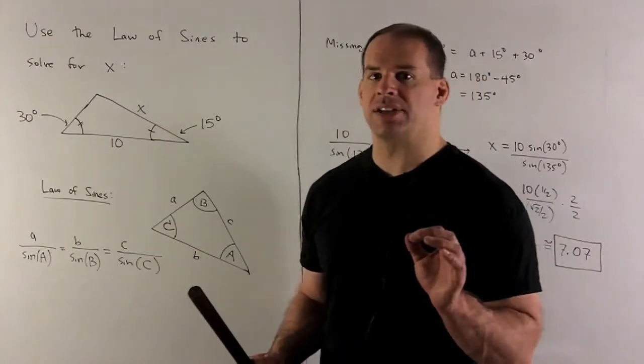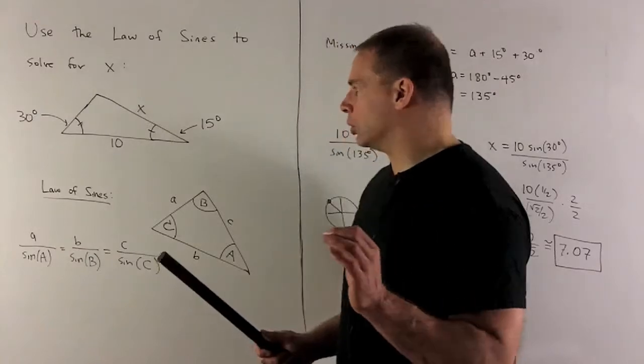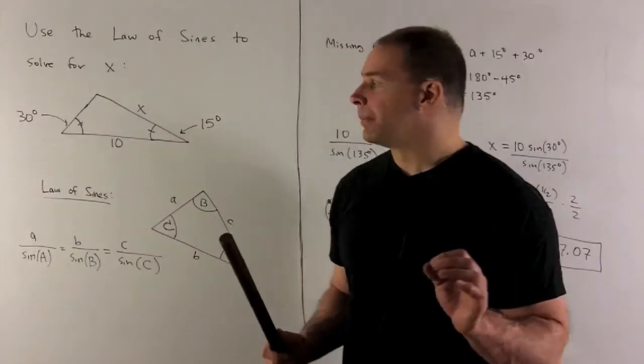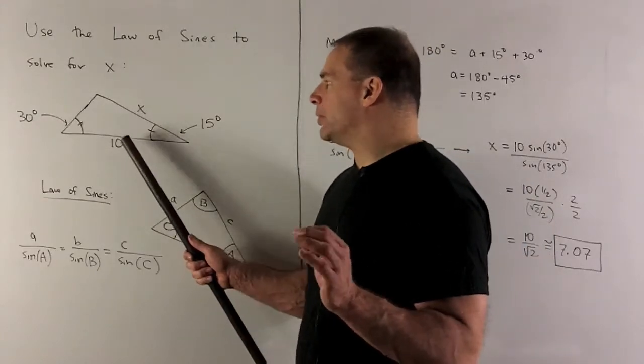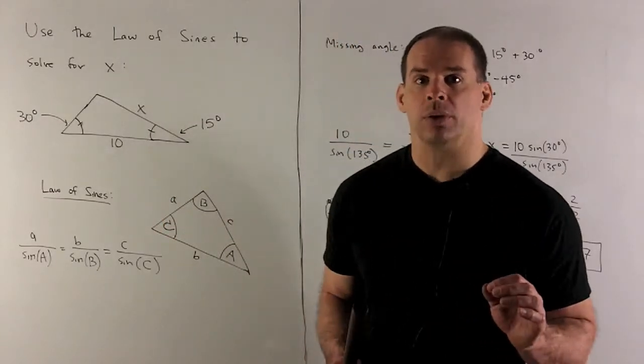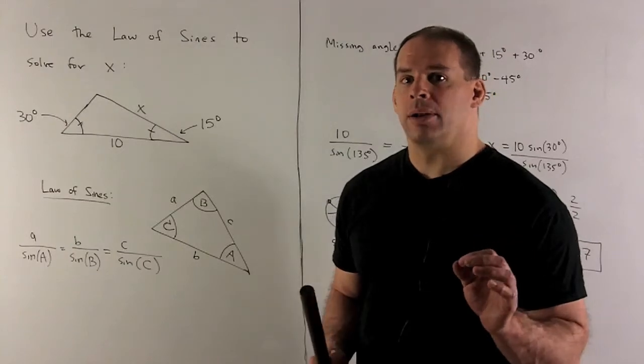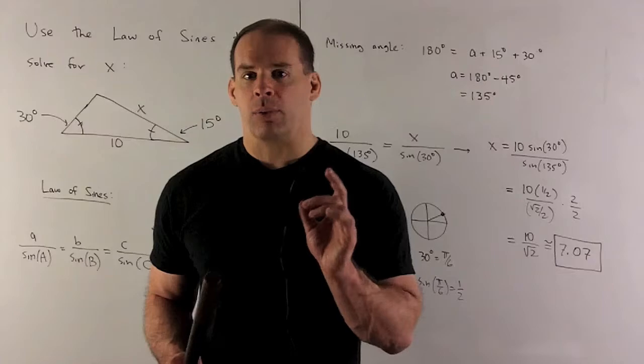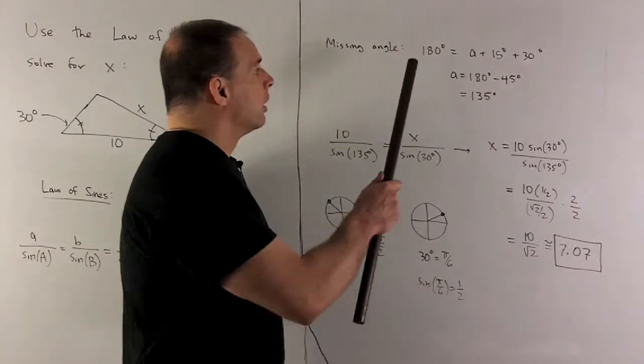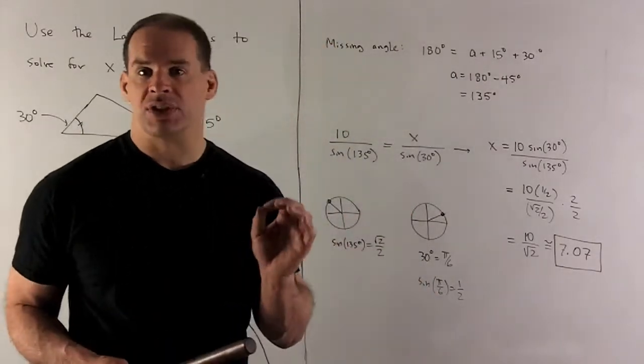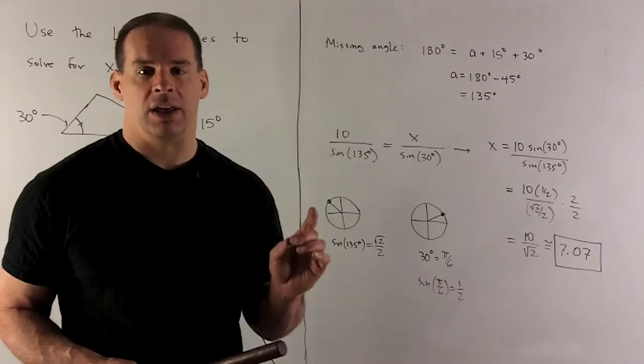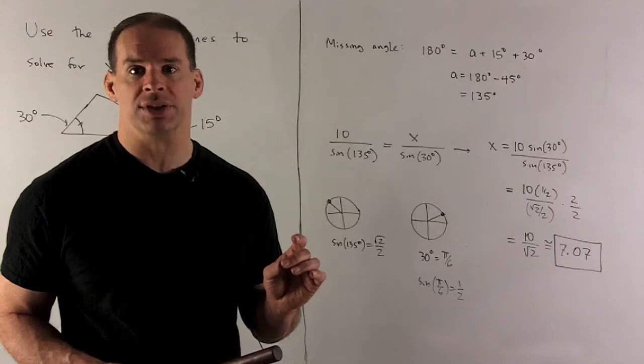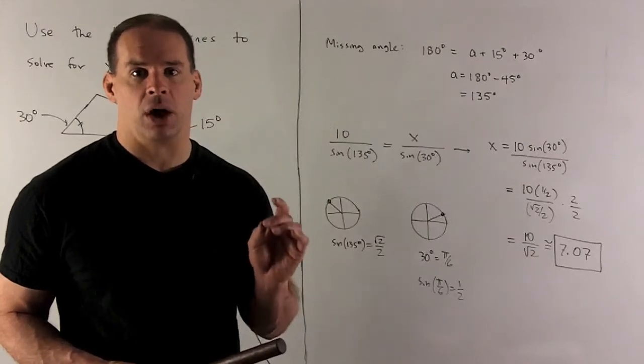In our special case, let's see what we have. We're looking for X. The angle that goes with that is 30 degrees. We're given 10, but we don't have the corresponding angle. We can get that. The angle we're missing is 180 degrees minus 30 degrees minus 15 degrees, which equals 135 degrees.